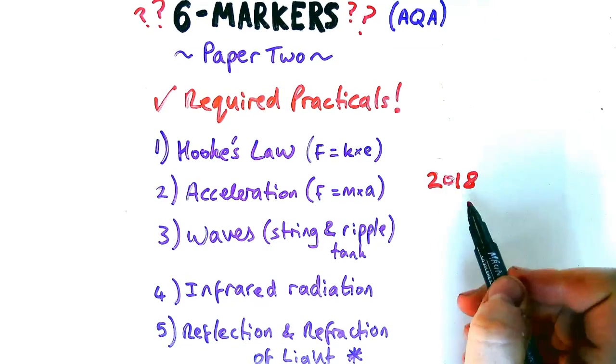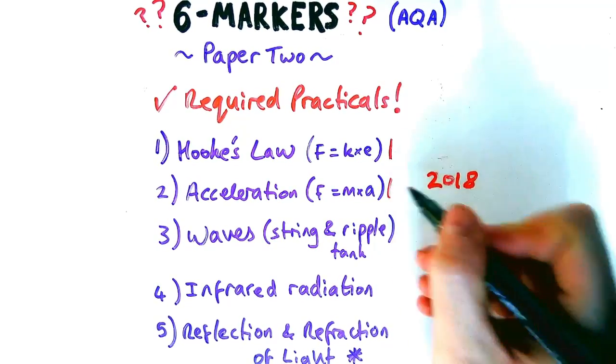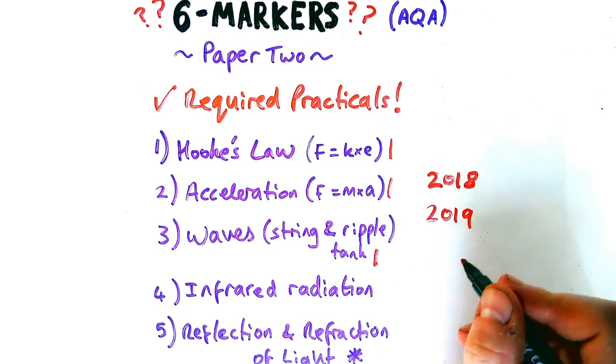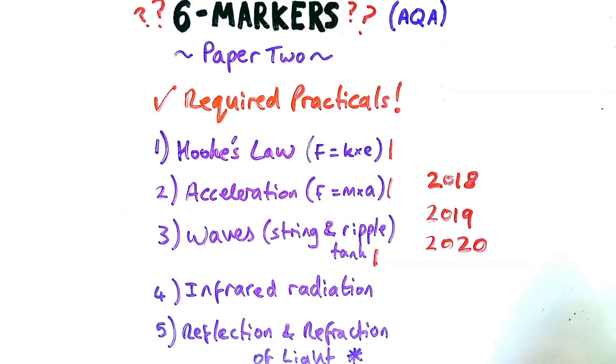Let's have a look at the years and how many times each one has come up. So 2018, combined science was Hooke's Law. Separate science was acceleration. 2019, there was just one in separate science about waves.